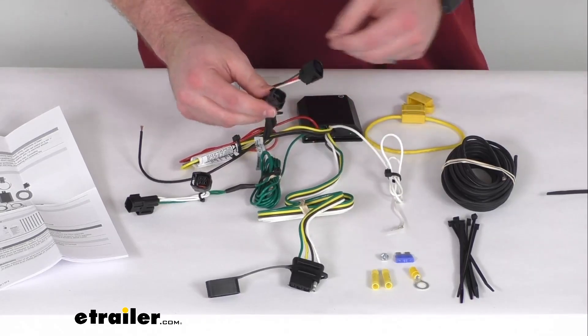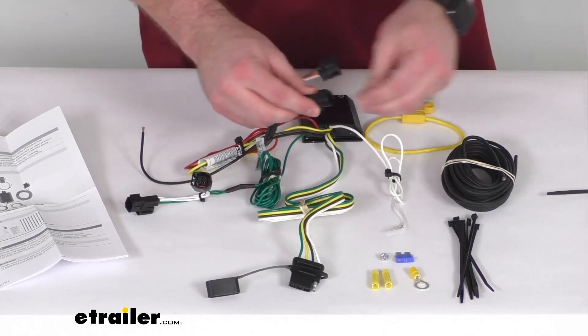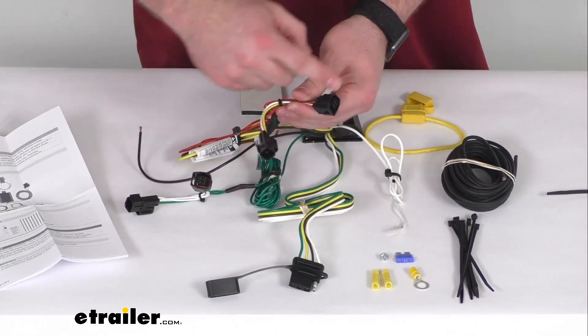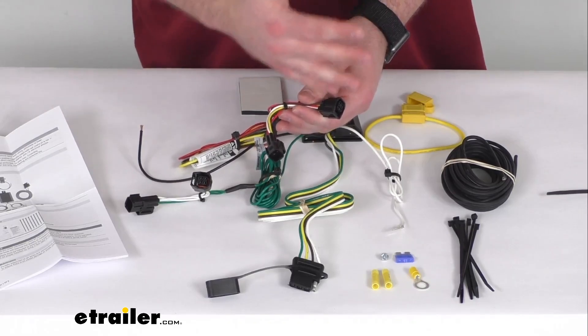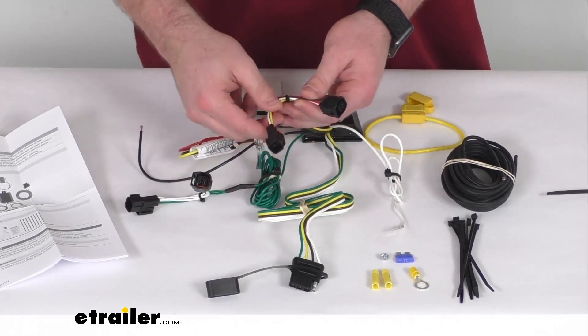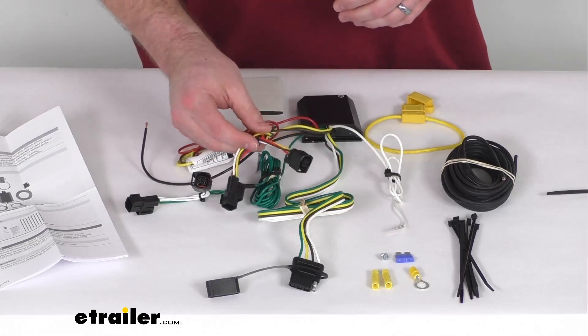You just simply unplug the wiring connections that are there, plug this in line and that's going to re-complete that circuit so that your tail lights will work properly on your vehicle but then it will also send that signal out to your trailer as well.